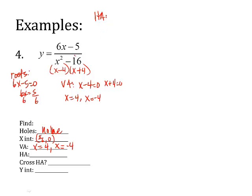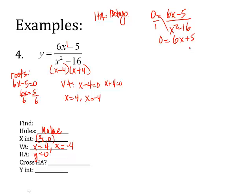For the horizontal asymptote, using Bobby O'Bottin O'HTC: the top has degree 1 and the bottom has degree 2, so it's Bobby O — big on bottom — giving y = 0. Does it cross? Set 0 equal to (6x − 5) over (x² − 16) and cross multiply: 0 = 6x − 5. Solving: add 5 to both sides and divide by 6, giving x = 5/6. The crossing point is (5/6, 0) — notice that's the same as the root. Sometimes that works out that way, so don't bank on it always being that easy.